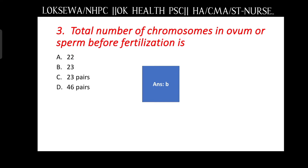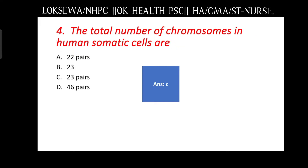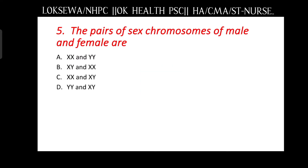The total number of chromosomes in human somatic cells is 23 pairs. Next question: the pair of sex chromosomes of male and female are — XX and XYY, XY and XX, XX and XY, or YY and XY?